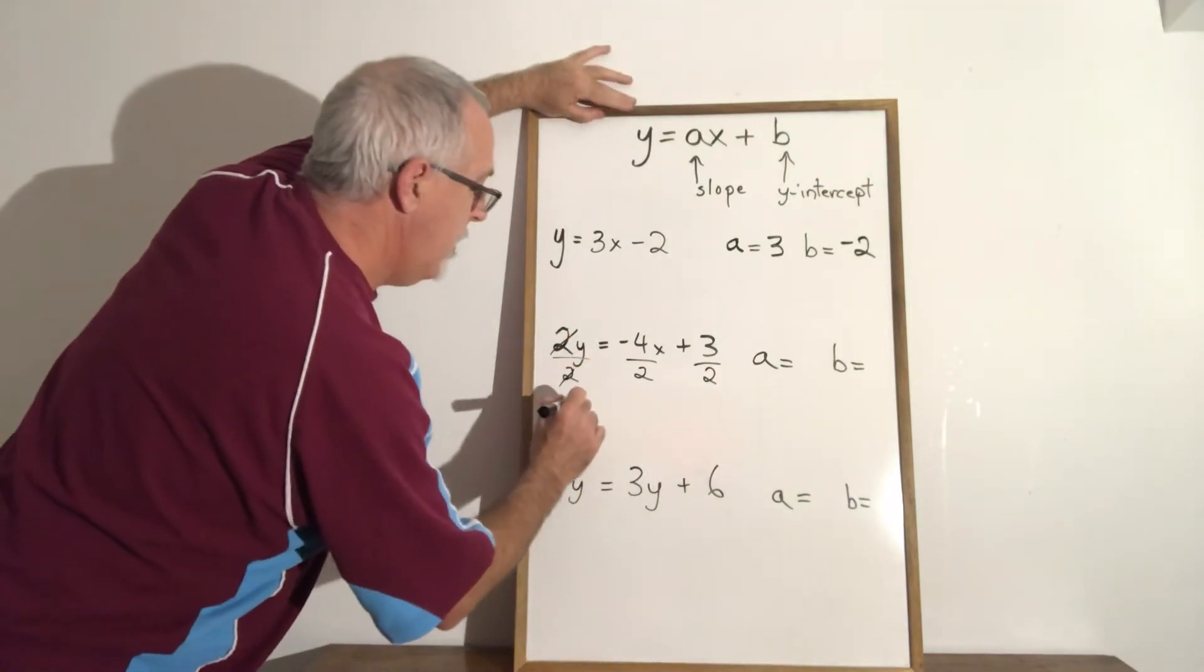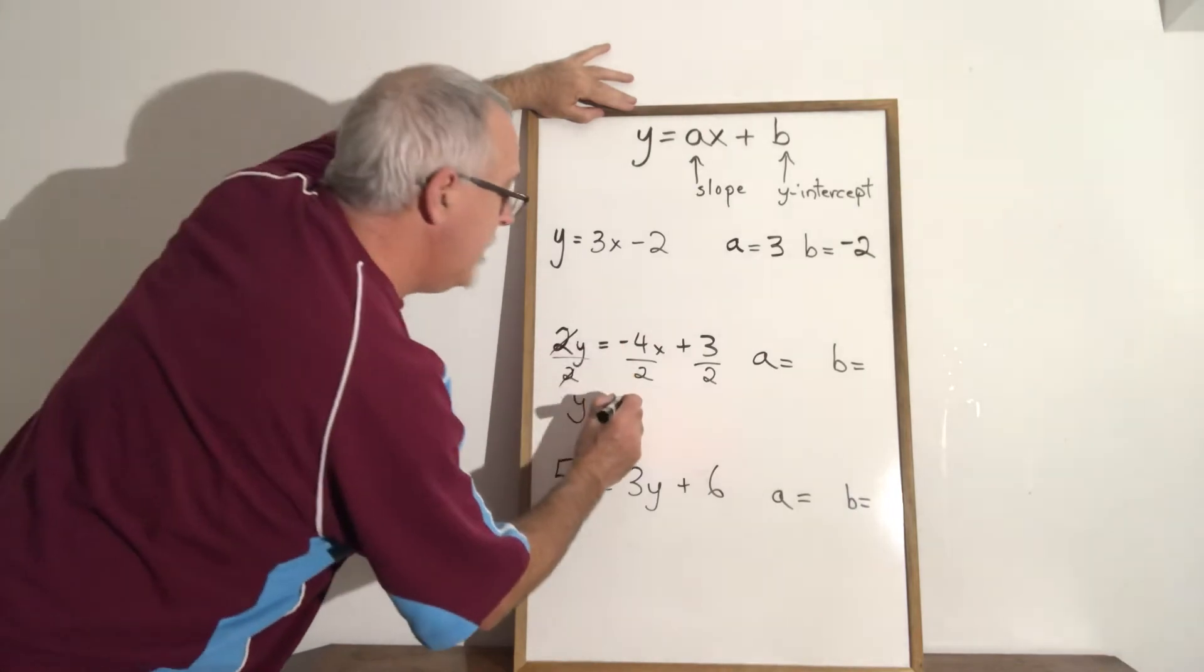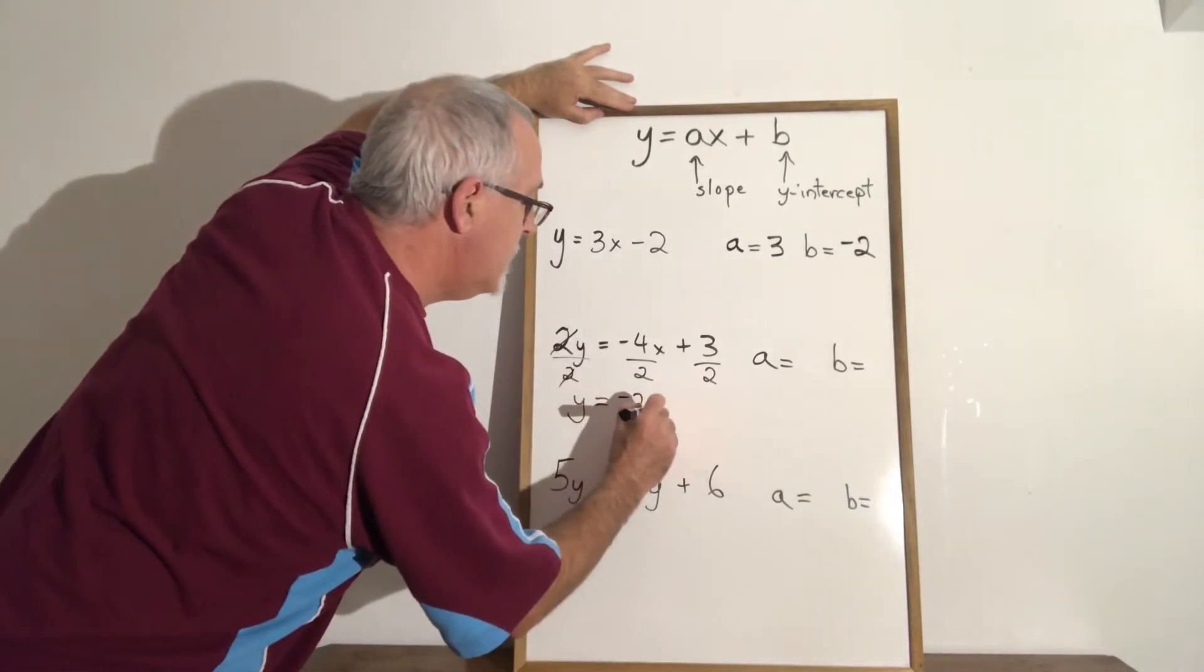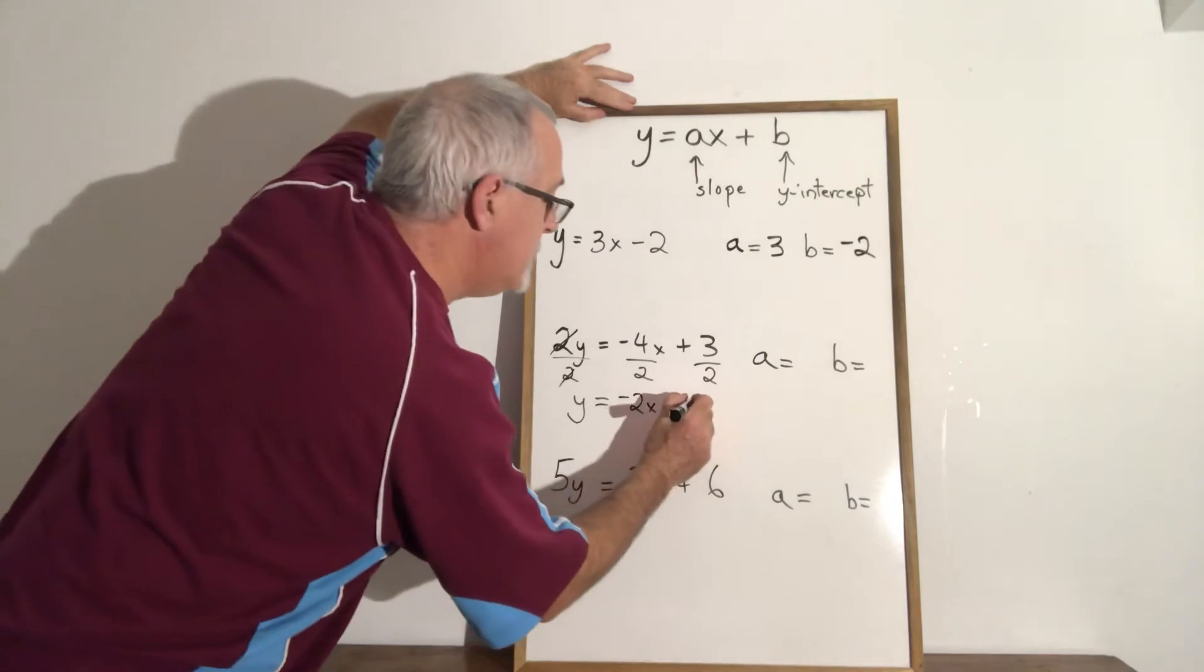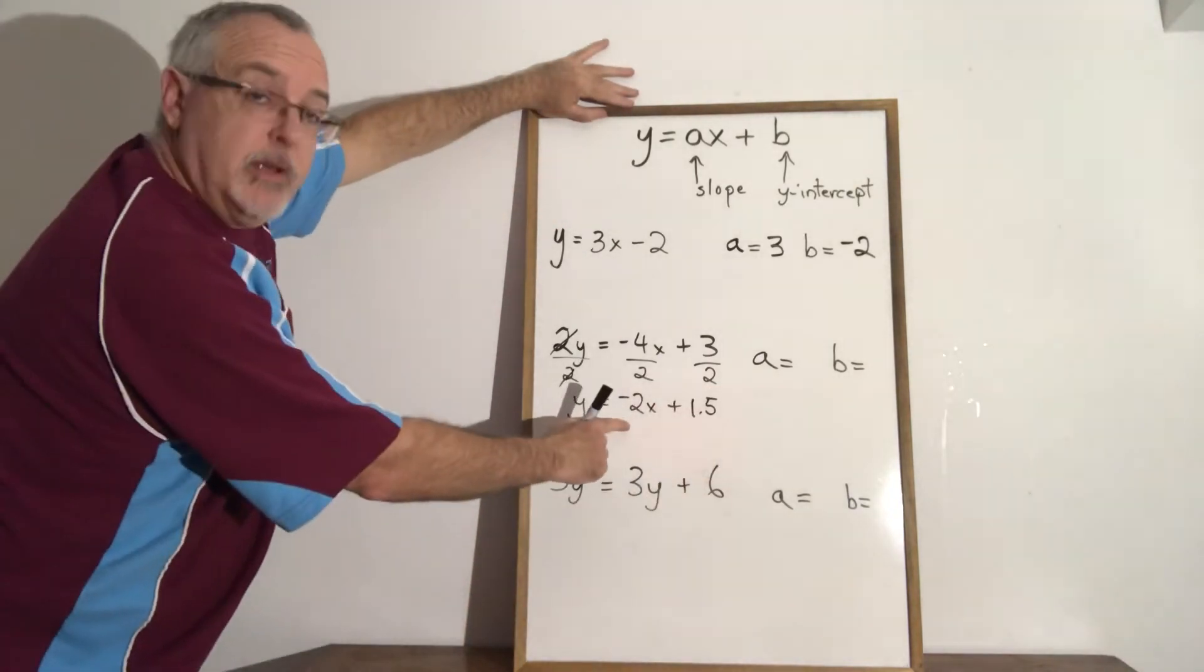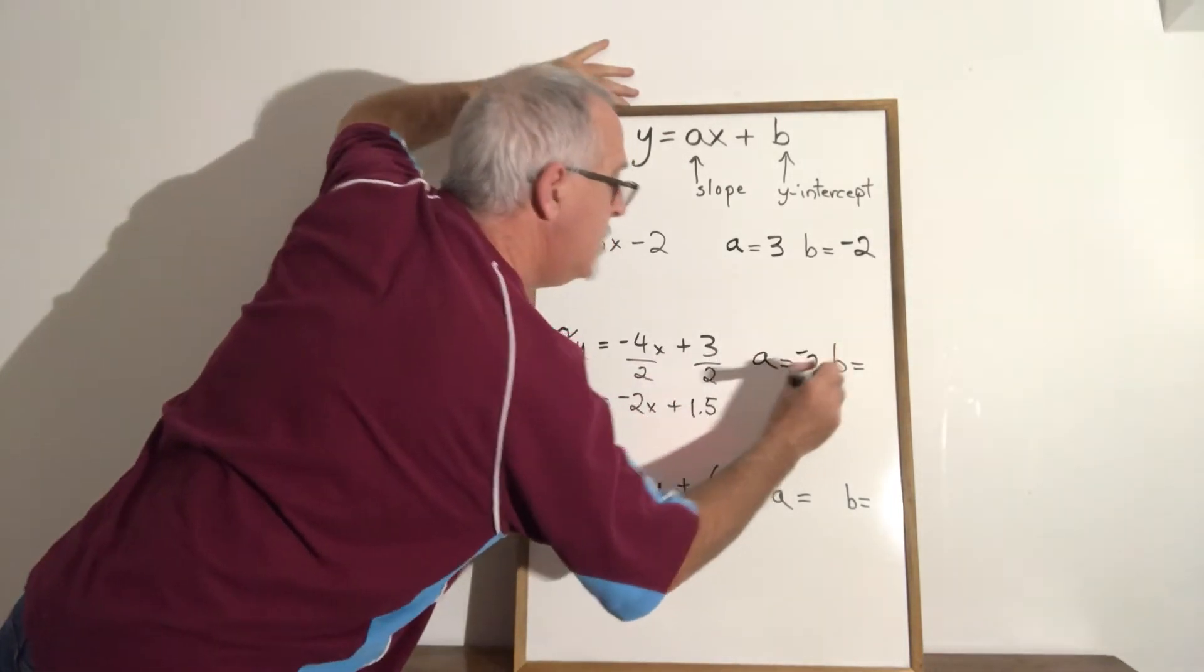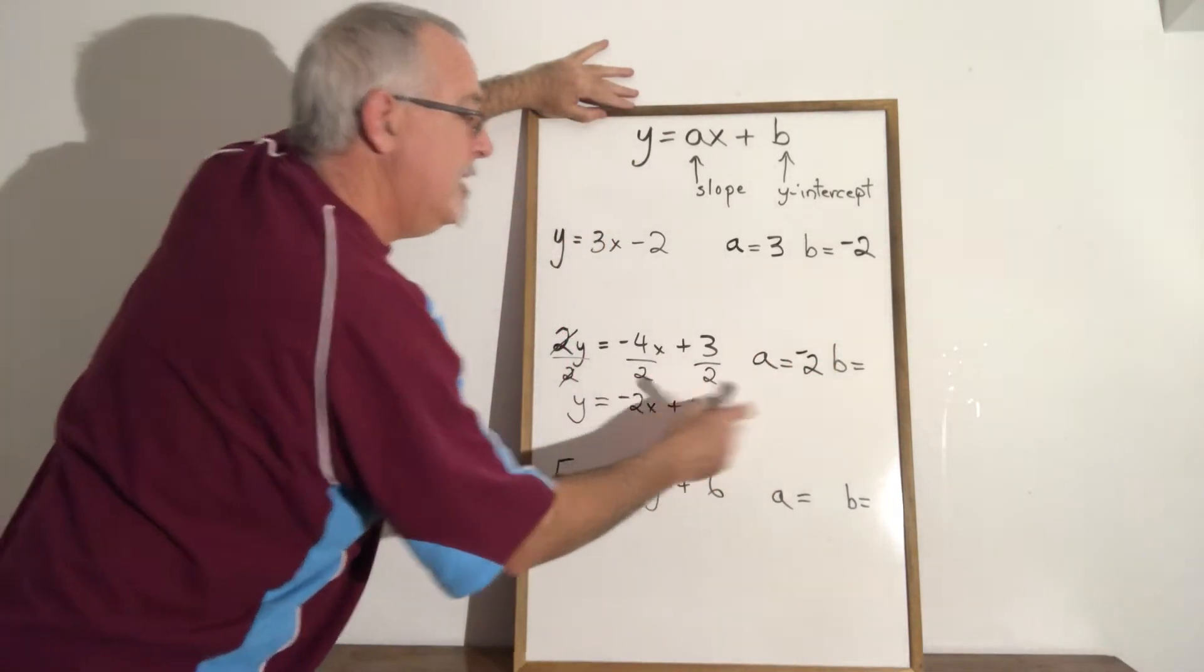These cancel. My y is now isolated on the left of the equals and after simplifying I have negative two x plus three halves or if I prefer decimals plus one point five. Therefore now I can see my slope a is negative two and my y-intercept b is one point five.